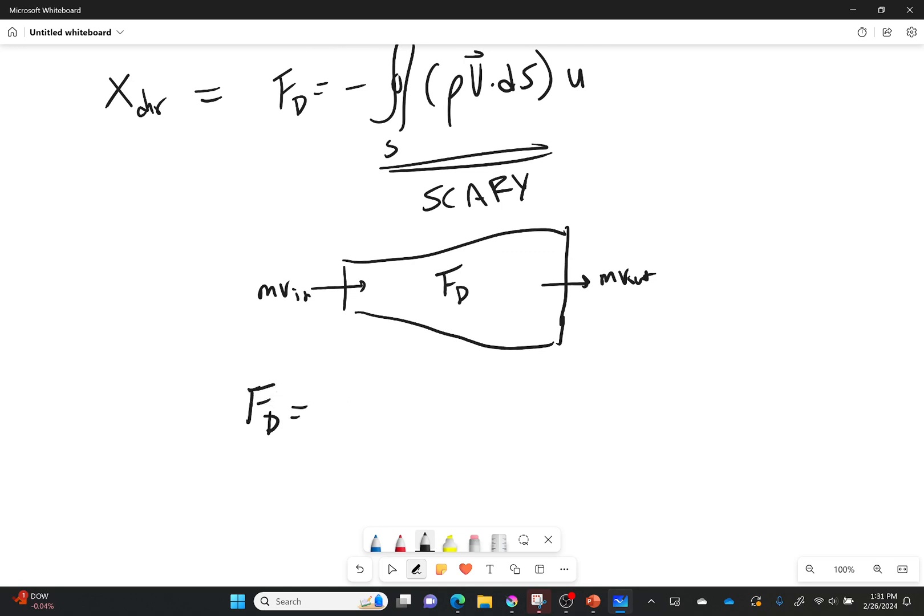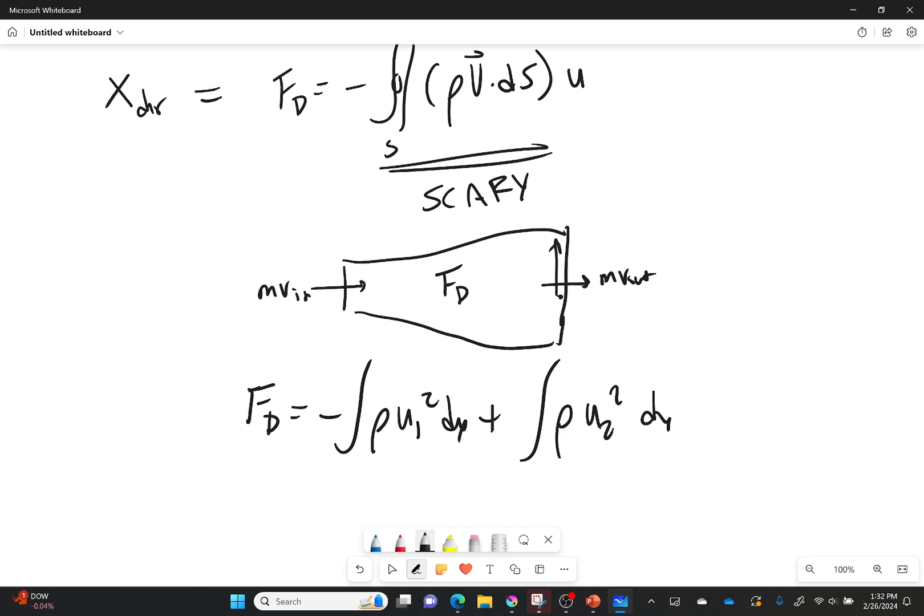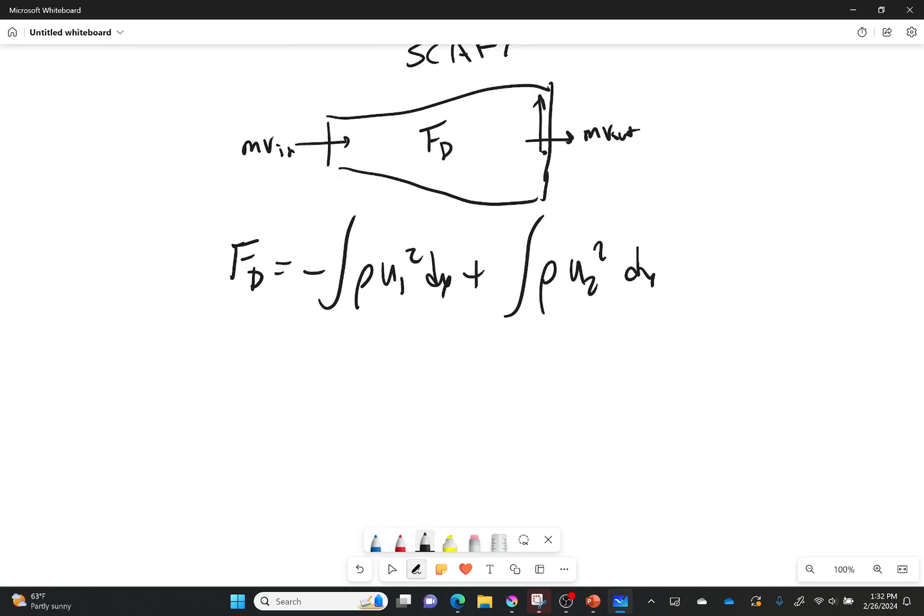So force of drag is going to be equal to, I'm going to do the left side first. So negative integral, we'll just leave it out bound right now. Density times u1 squared. And we know what u1 is because that's just a free stream velocity. Plus integral of my density times u2 squared. And both of these are dy because I'm going to be integrating them from the center line up to take into account that velocity profile. Now this is fine. This works, but I honestly could solve this right now. However, I would have a little bit of issues with the u1 because I don't have any heights for u1. And so that would make things a little bit harder on me. So let's see if we can get rid of the u1. At least put it in a little bit different form. I think we can do it.